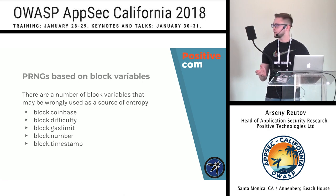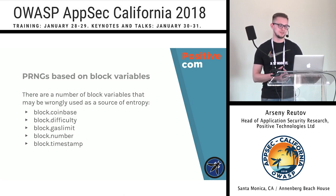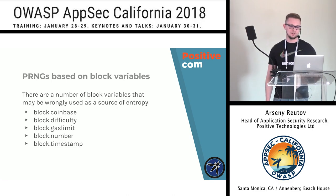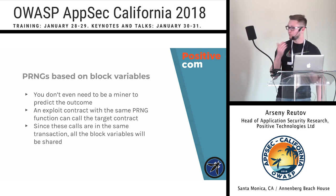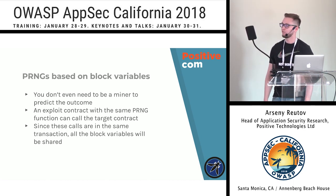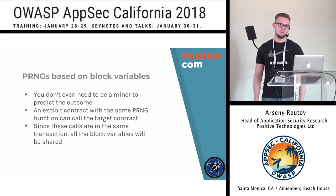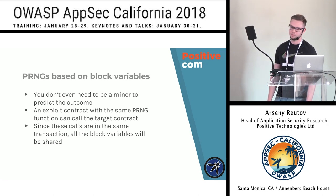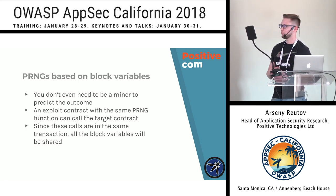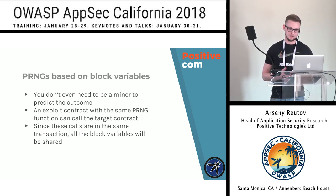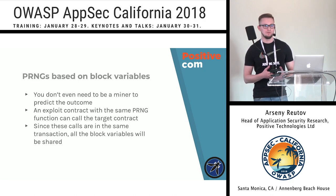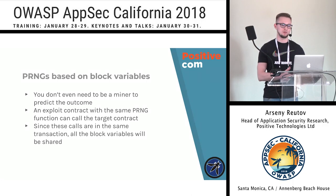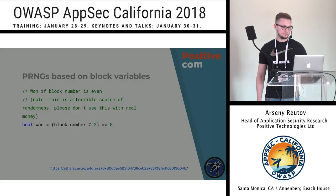Gas limit is just a number that some contracts deem unpredictable, but it's not. Also the block number and timestamp. Why are RNGs based on block variables vulnerable? You don't even need to be a miner to predict the outcome. In Ethereum, you can make an exploit contract that issues a so-called internal message — it calls the target contract, and the state of the RNG will be the same, because if it relies on block variables, the value of those variables will be identical in both the exploit contract and the target contract.